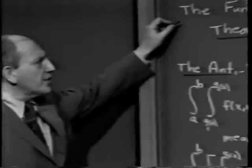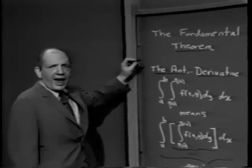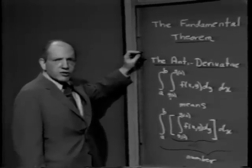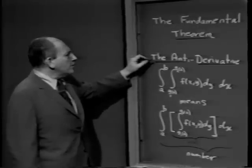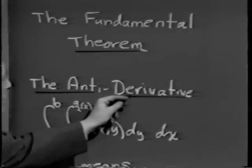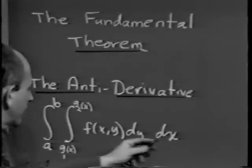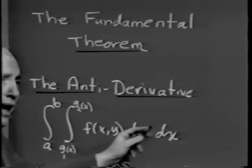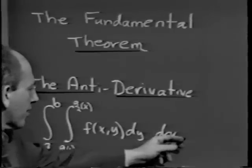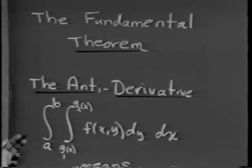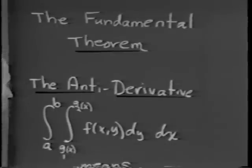I call today's lesson the fundamental theorem. What I'm going to do now is to pretend that we never had the lecture of last time, that we have never heard of an infinite sum. And I'm going to introduce what one calls the antiderivative of a function of two independent variables, keeping in mind the analogy that for more than two independent variables, a similar treatment holds. The exercises will include problems that have more than two independent variables.